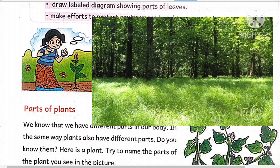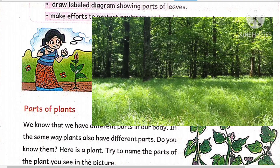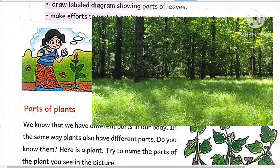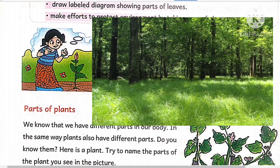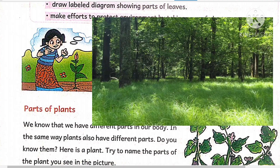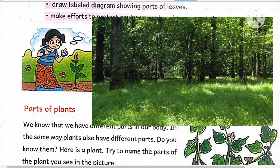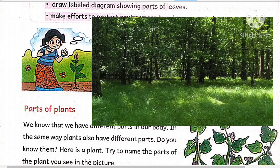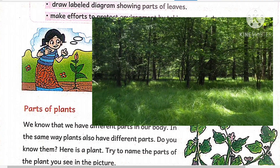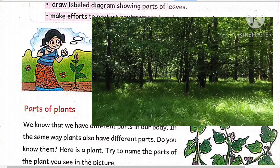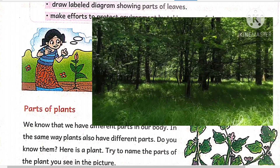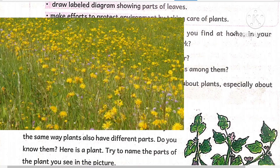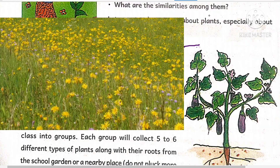They can also make efforts to protect the environment by taking care of plants. See this girl — she is observing a plant. What kinds of plants do you find at home, in your surroundings, or in the park? For example, this is a rose plant, this is a bryophyllum plant, this is another flower, and this is a brinjal plant. How can we differentiate these plants and tell their particular parts?